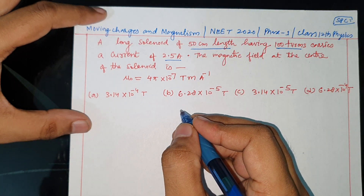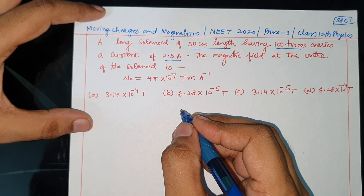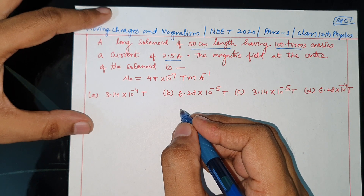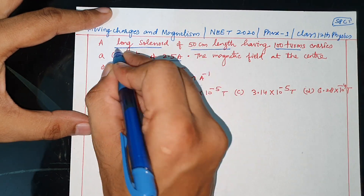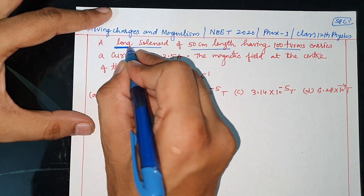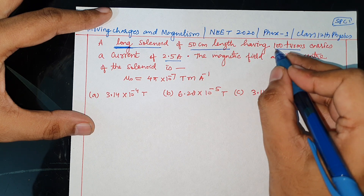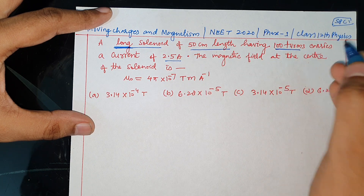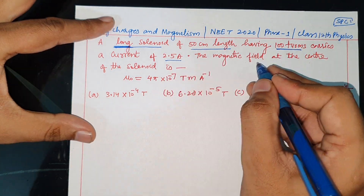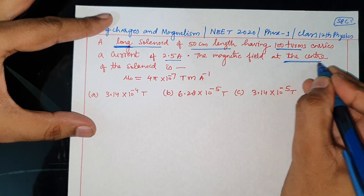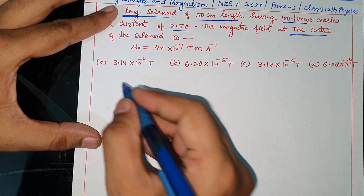Hello dear students, welcome back to my channel Physics SPC. Moving charges and magnetism ka ek question: a long solenoid, 50 centimeter length, having 100 turns, carries a current of 2.5 ampere. The magnetic field at the center of the solenoid is — solution.